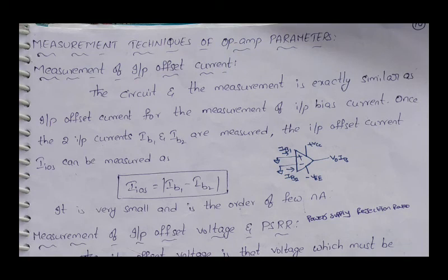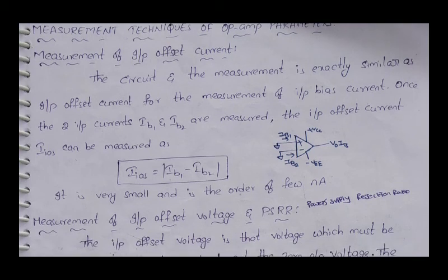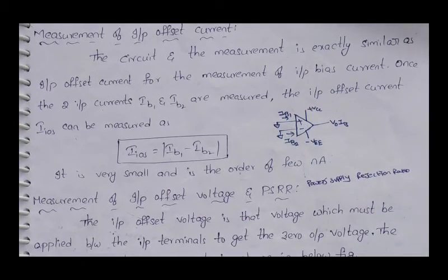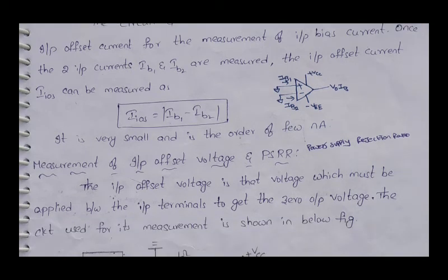Now, measurement techniques of op-amp parameters. We have discussed DC characteristics including input bias current, input offset current, and thermal drift. The measurement of input offset current: the circuit used is exactly similar to that for input bias current. Input offset current IOS equals IB1 minus IB2, where V1 is the non-inverting terminal current IB1 and V2 is the inverting terminal current IB2.